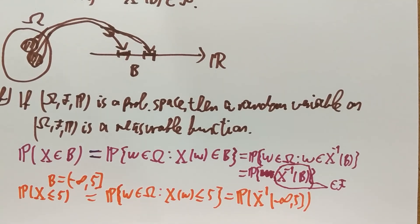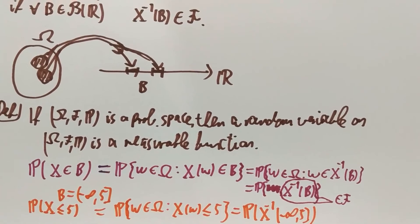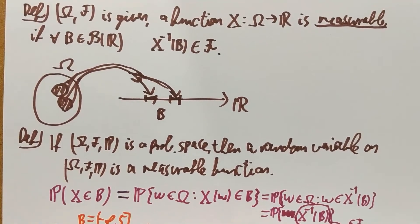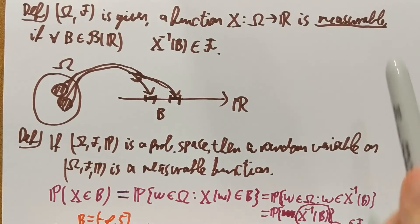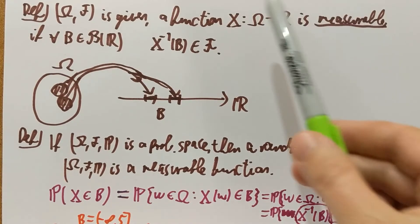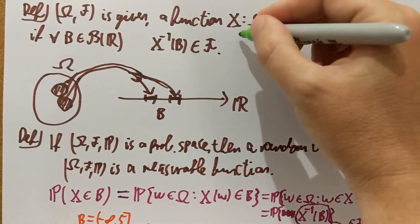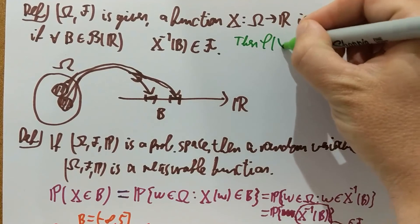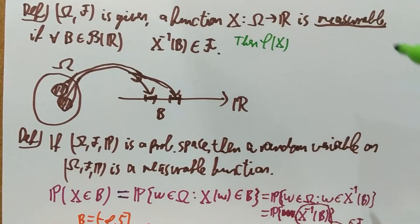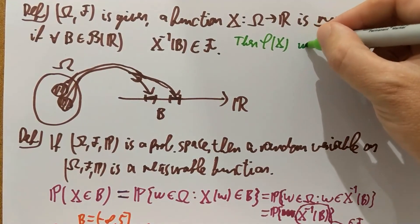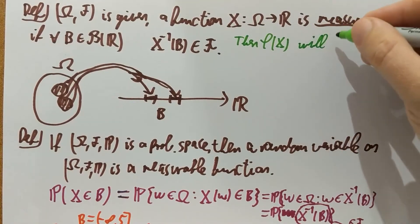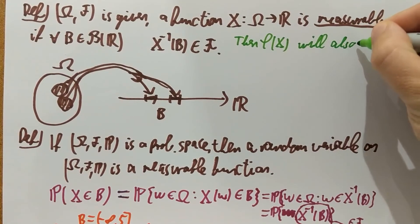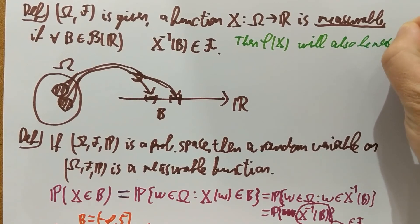So that's how all this measure-theoretic stuff comes together. Just a side remark: if I have a measurable random variable X, then if I take any nice function of it — for example any continuous function — it stays measurable. So if I look at a measurable random variable X, then φ(X) with a nice function φ will also be measurable.